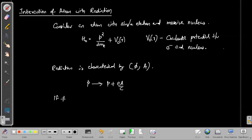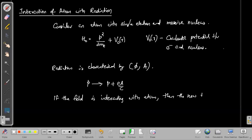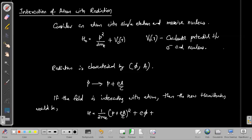So if the field is interacting with the atom, the new Hamiltonian would be H = (1/2mₑ)(p + eA/c)² + eφ + V₀(r). We can now simplify this expression.